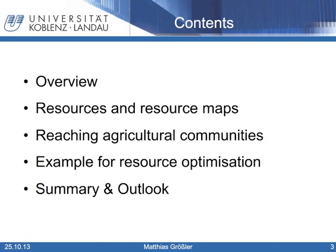The presentation gives an overview on the aims and objectives of my project work. In the first topic, I will present general information about resources, resource maps and the correlation between risk and resources. The next issue is an approach of how to reach agricultural communities with risk mitigation resources. Afterwards, I will show a short example of resource optimization with available preventive resources, completed by a summary and an outlook to further work.